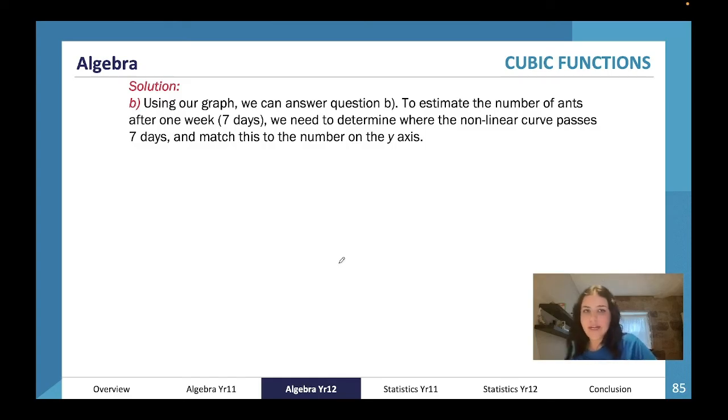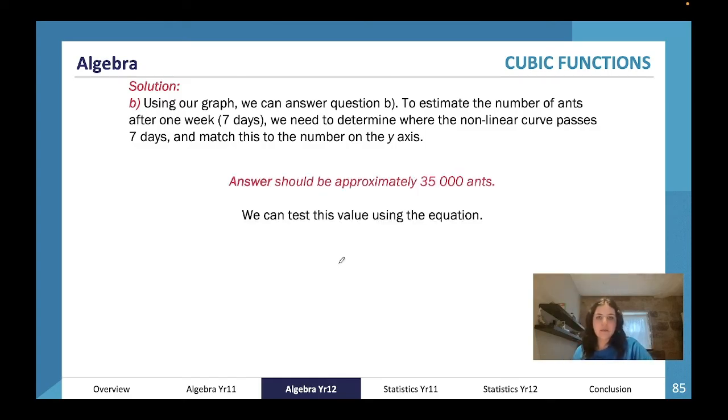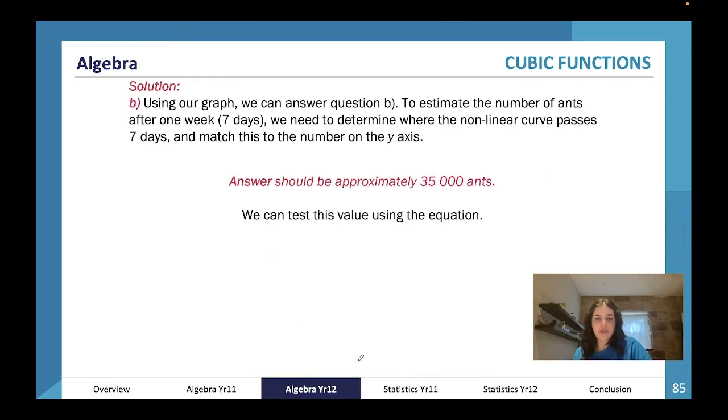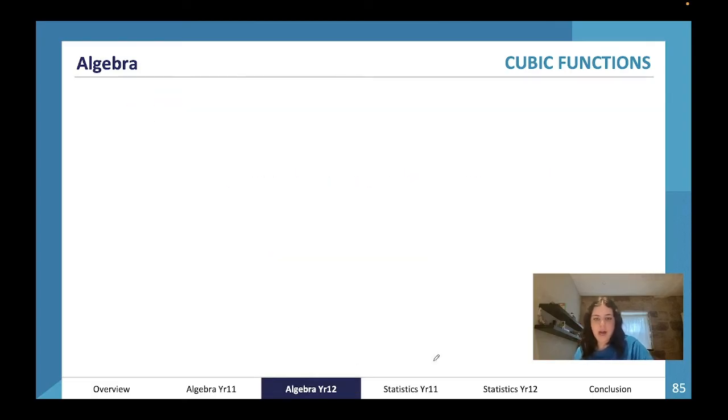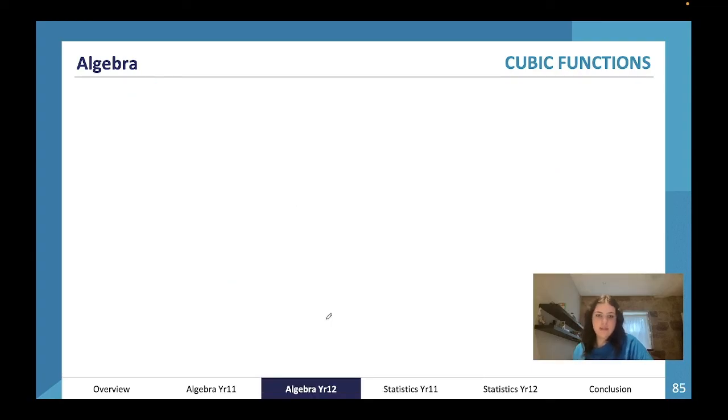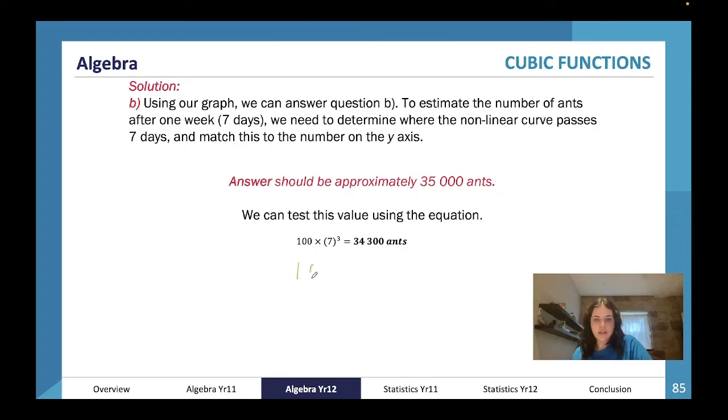By using the graph, we can now answer question b: to estimate the number of ants after one week, we need to determine where the non-linear curve passes seven days. This would be 35,000 ants by looking at our graph. If we track up and go to about here, we'd be about 35,000 ants. But we can test that in our formula by going 100 times seven days cubed: 34,300 ants. So 35,000 ants is approximately correct.